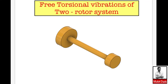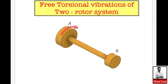In this video we will be discussing the torsional vibrations of a two-rotor system. A two-rotor system means a shaft held in bearings carrying two rotors at each of its ends. Torsional vibrations will occur only when the rotors A and B are rotating or moving in the opposite direction — that is one of the necessary conditions for producing torsional vibrations in this two-rotor system.